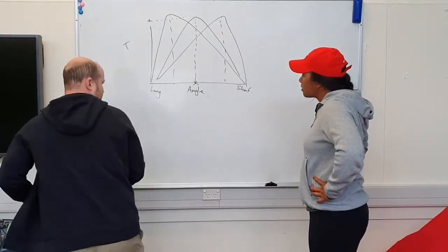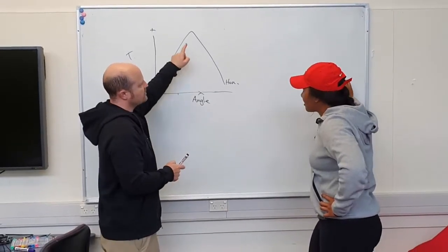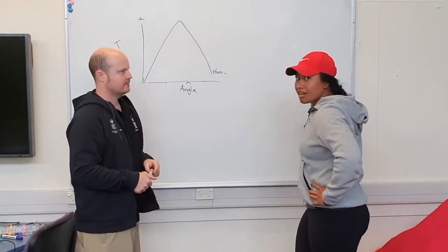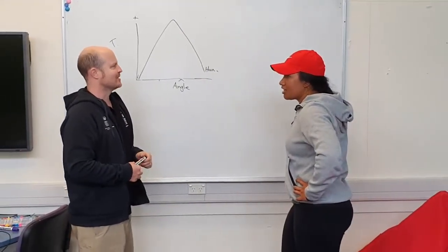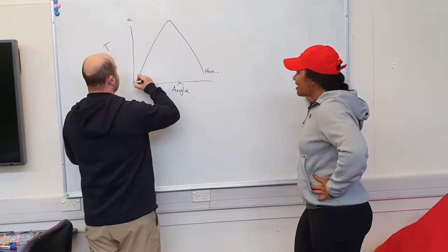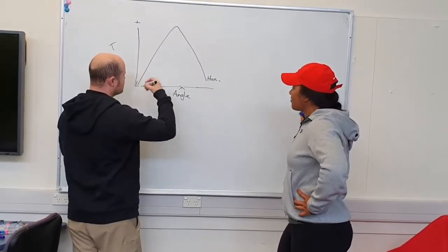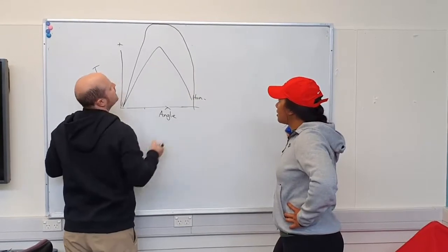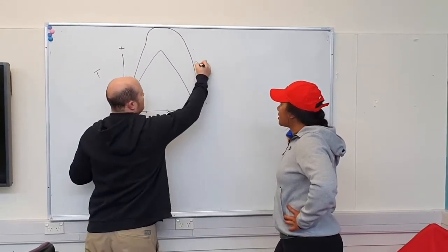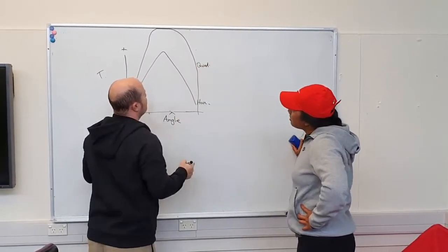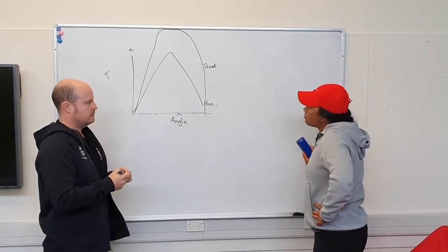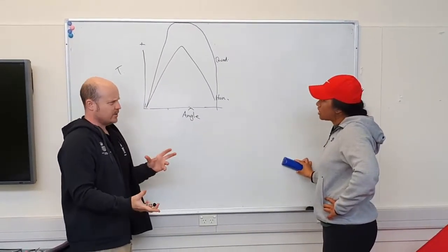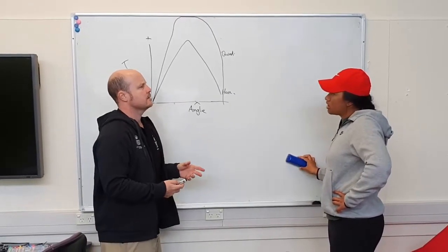What else? So we've just measured how strong a hamstring is. What other things can we measure? Quads. So now I can take the same strength measurement of our quads. What is this telling me? That my quads are stronger than my hamstrings. Would I expect my quads to be stronger than my hamstrings? Yes.